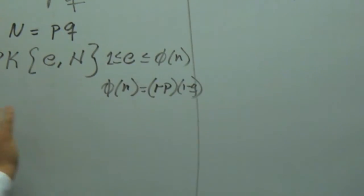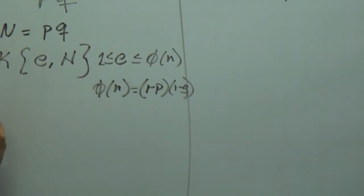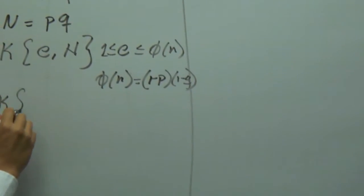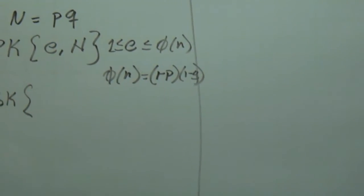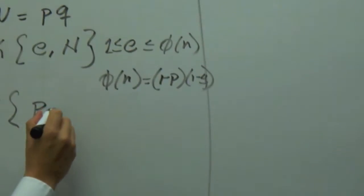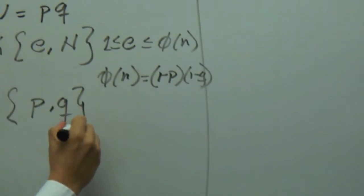Now this is the public key to encryption, and the decryption key is the secret key, is the trapdoor inverse function, which is based on p and q, just like that.